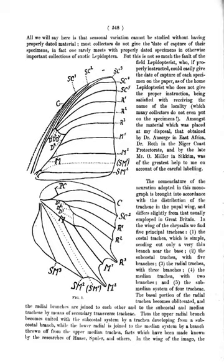Valvula: one of four blades in a female hemipteran with a laciniate type of ovipositor, that combine to form the ovipositing mechanism. Vein: hollow structures formed from the coupling of the upper and lower walls of the wing; they provide both rigidity and flexibility to the wing. See also Comstock-Needham system.